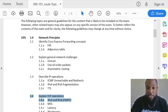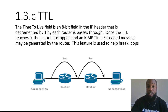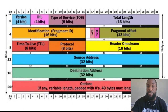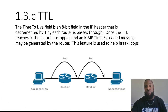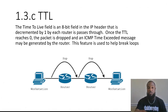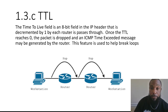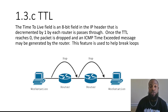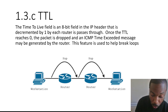Time to Live is an 8-bit field that's in the IP header. Remember the fields we went over in the IP header — that's 20 bytes, and 8 bits of that 20 bytes represents the Time to Live. It's decremented by one by each router it passes through. Once the TTL reaches zero, the packet is dropped and an ICMP Time Exceeded message may be generated by the router.